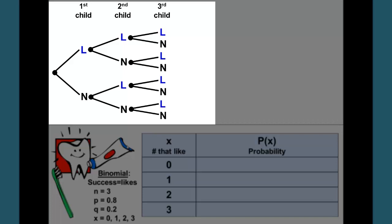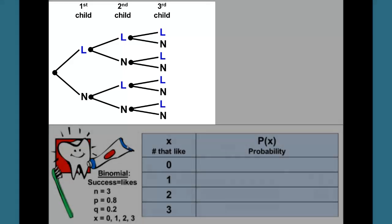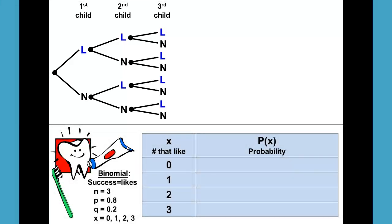So we now have our tree diagram and we have a total of eight possibilities. These possibilities are not equally likely but we can list the different outcomes and their individual probabilities. The first one would be that we got a child that liked, then a child that liked, and then a child that liked the toothpaste.